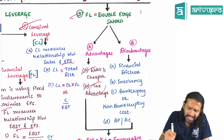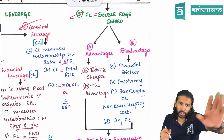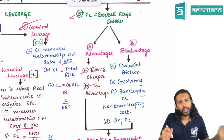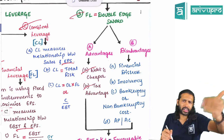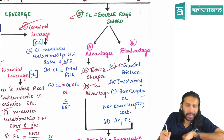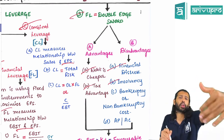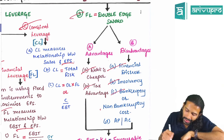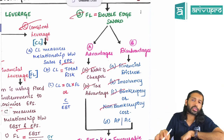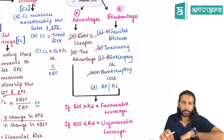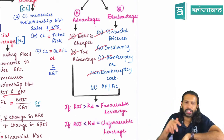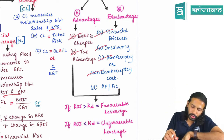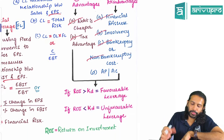Debt advantages include a tax advantage and no dilution in ownership control. The disadvantage is that the risk factor is higher, which may create financial distress. If financial distress continues for a long period, the company might go into insolvency, and there may be bankruptcy and non-bankruptcy costs associated with debt. Hence, financial leverage is called a double-edged sword.